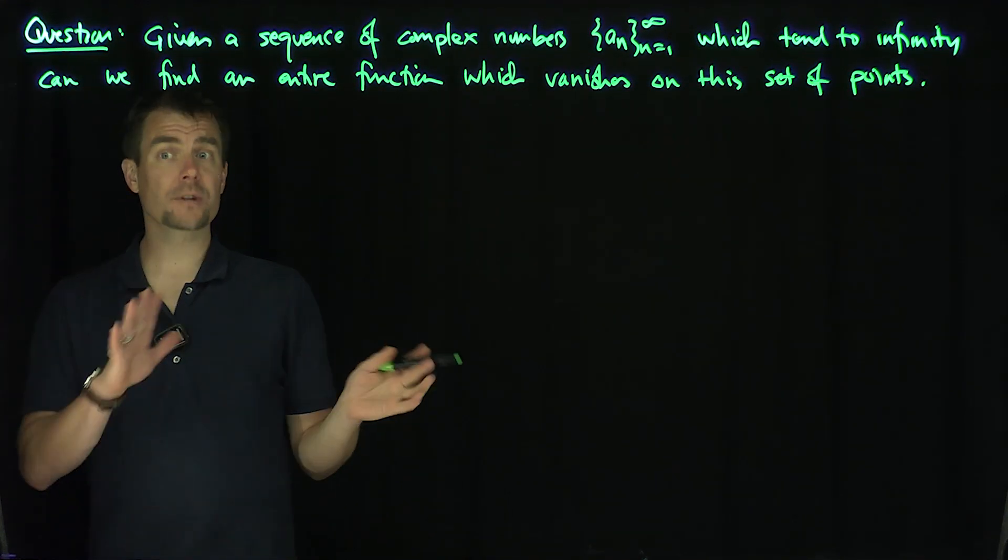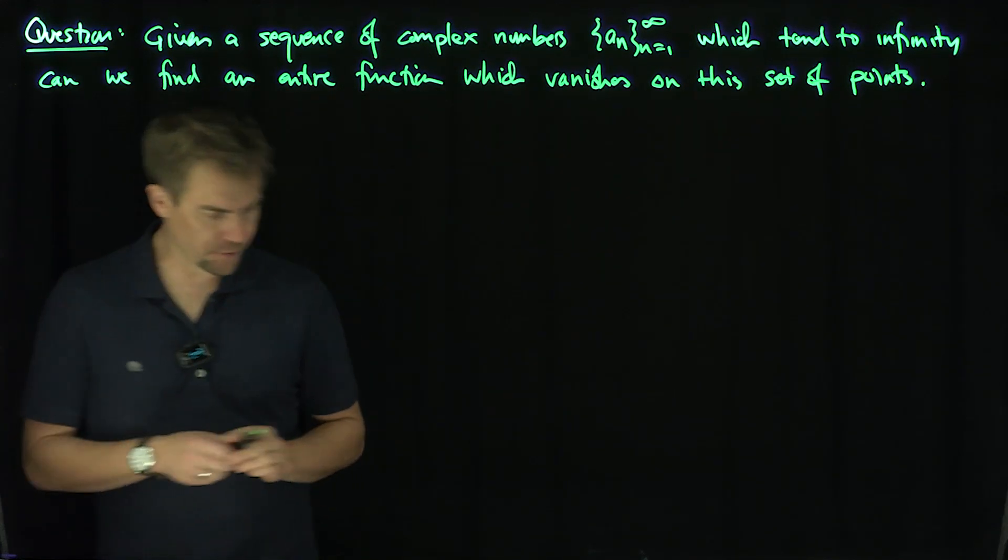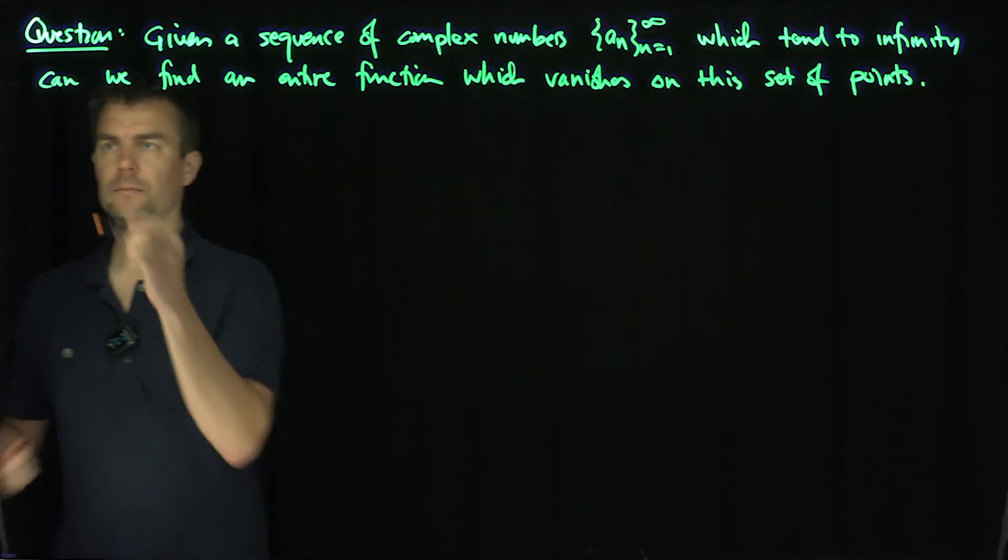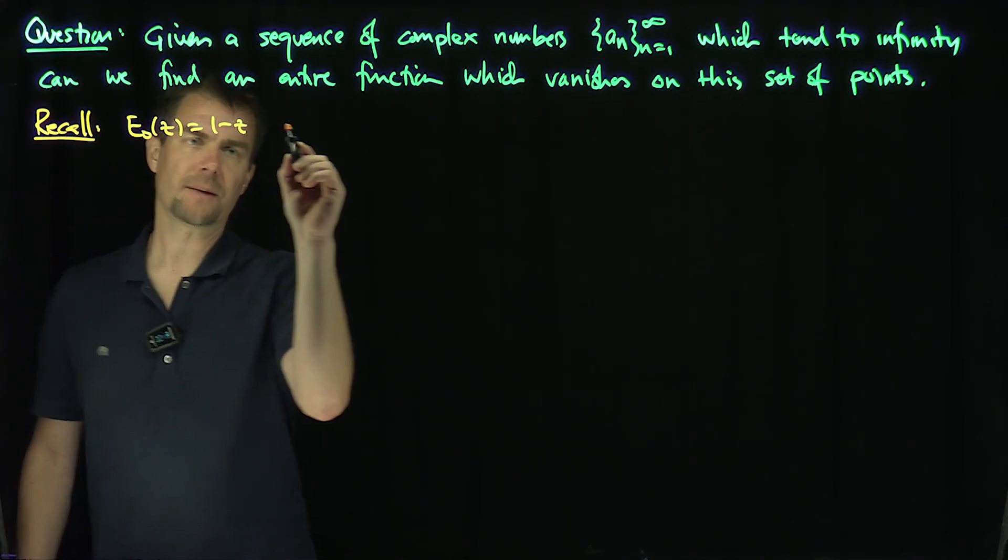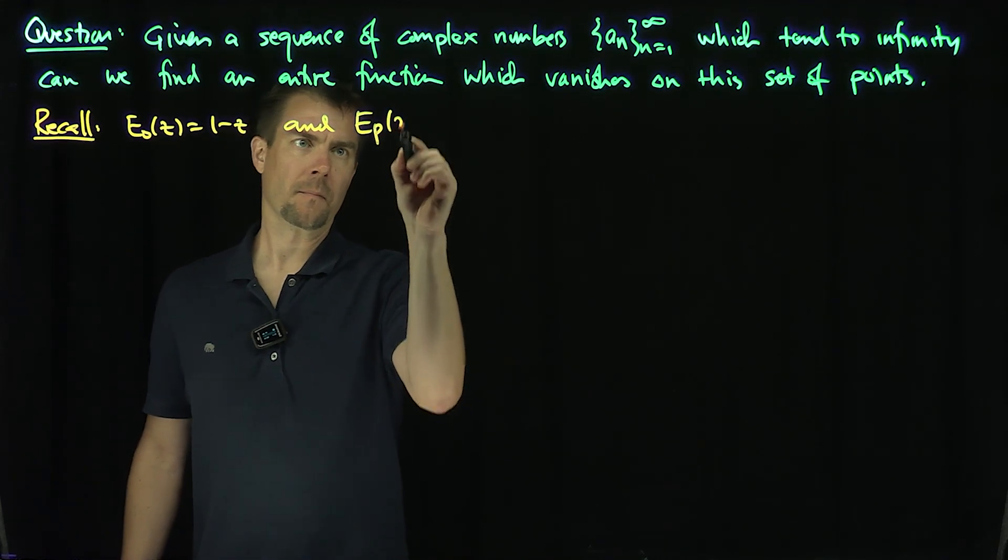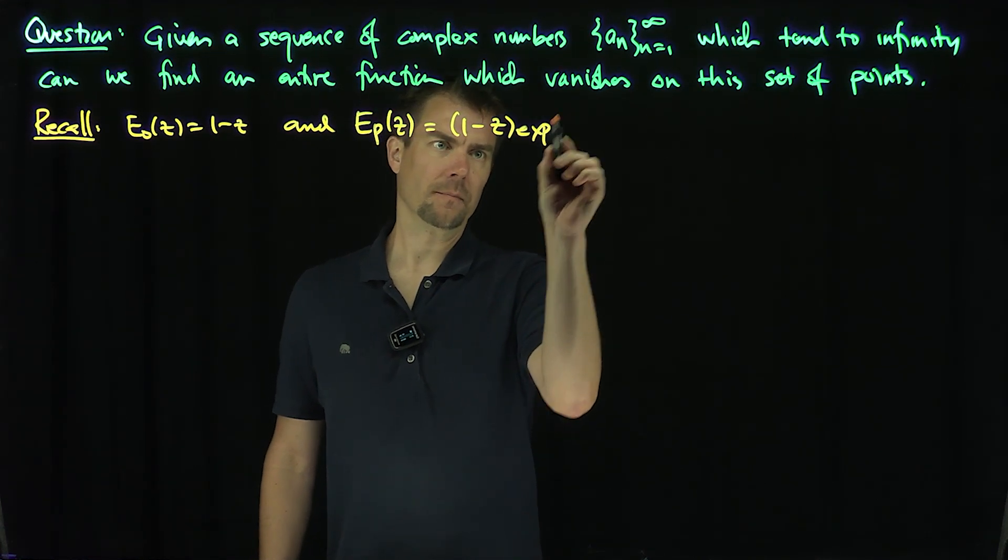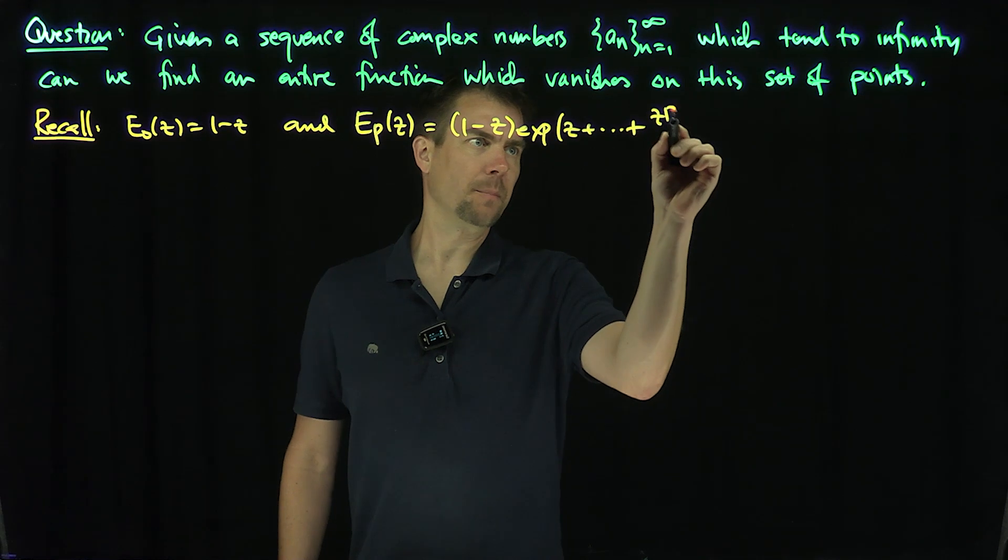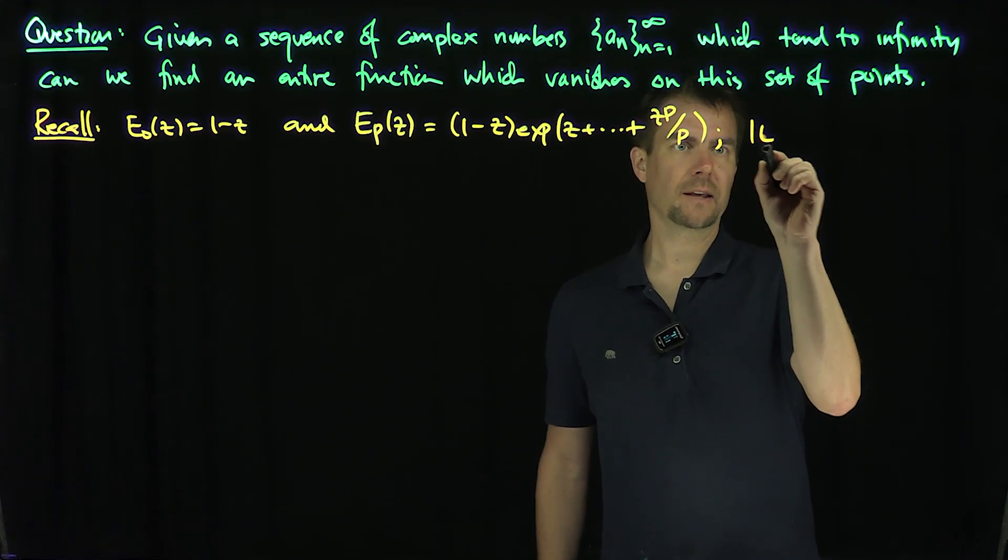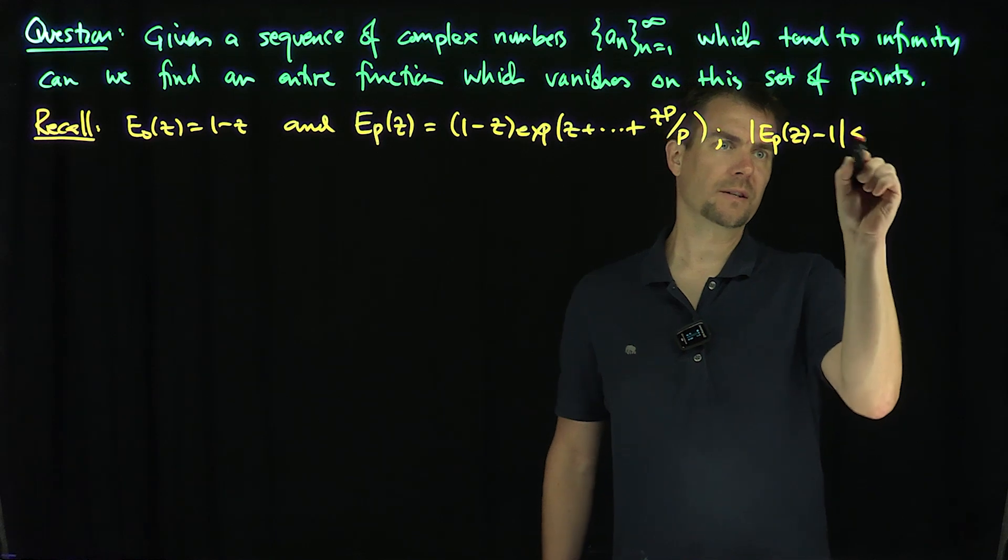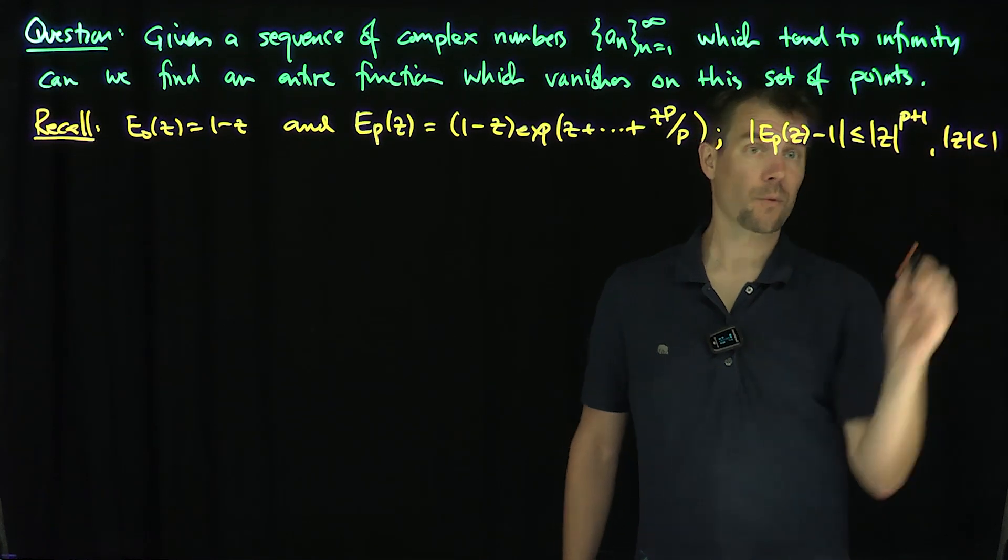To do this, we already talked about the Weierstrass elementary functions. Recall that e_0 of z is 1 minus z, and e_p of z is 1 minus z exponential of z plus z to the p over p. They have the property that e_p(z) minus 1 is less than or equal to z to the power of p plus 1, if the modulus of z is less than 1. We proved that in a previous video.